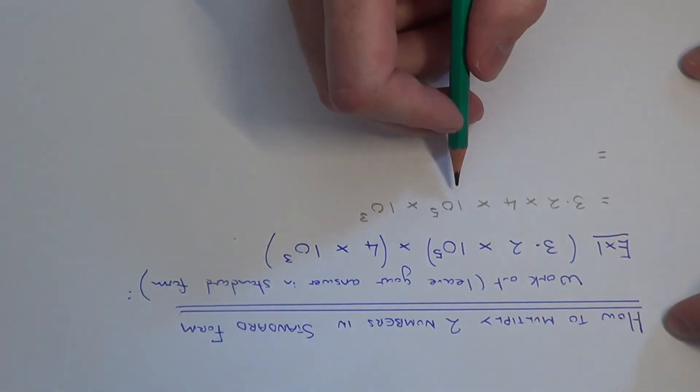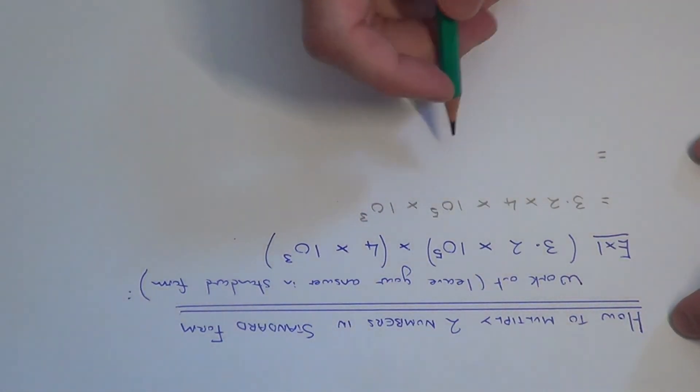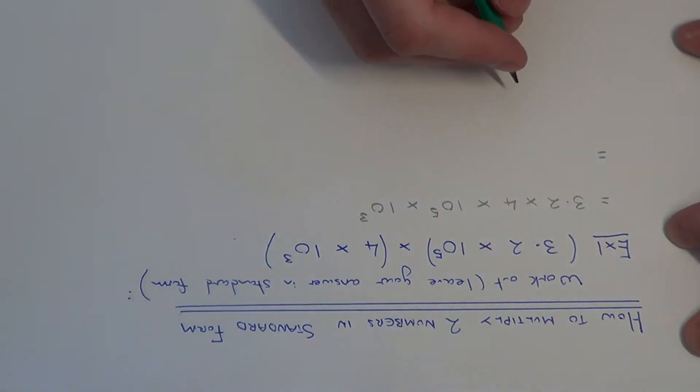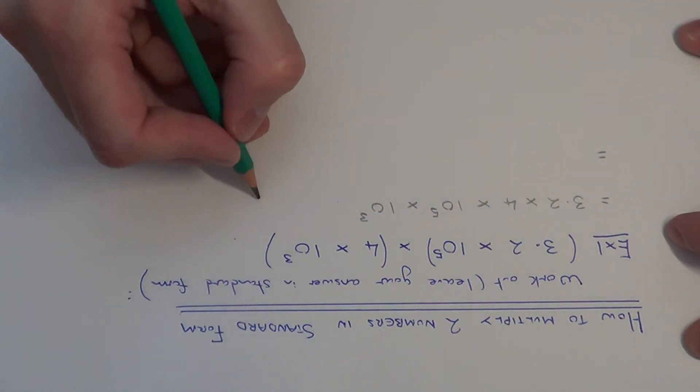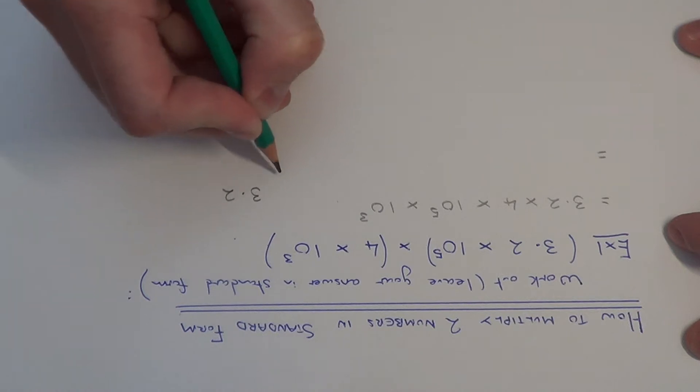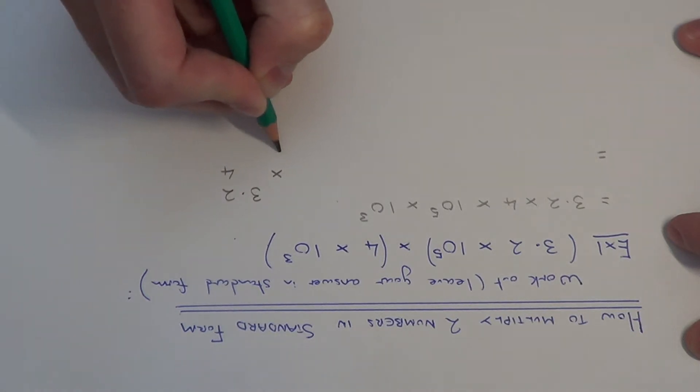So what we can do next then is just to work out 3.2 times 4 so you can do this using your short multiplication or any other method which you know.